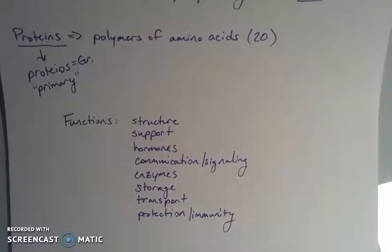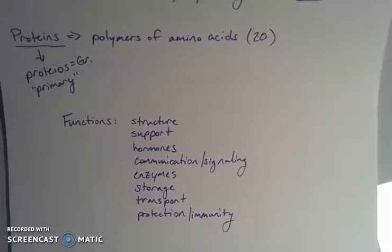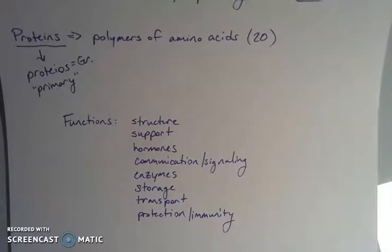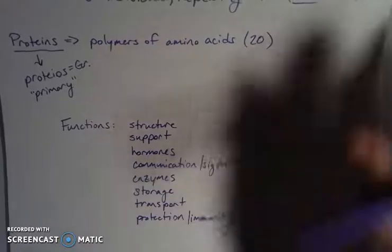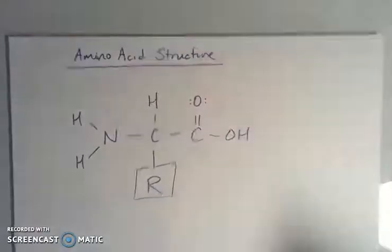Storage, so they're involved in keeping things where they're supposed to be. Transport, like hemoglobin, because it can transport oxygen all over the body. And protection and immunity, things like immunoglobulin is a protein that is important for keeping us healthy. So proteins have a ton of different functions and they're made up of 20 different amino acids.